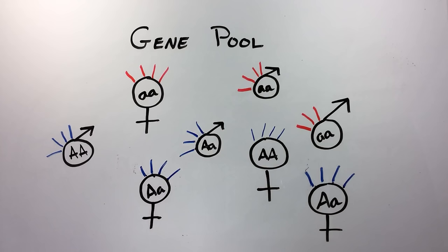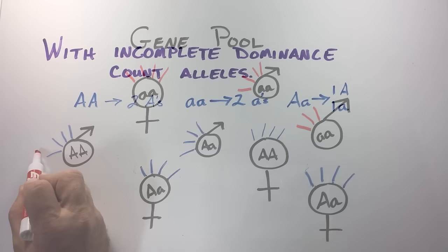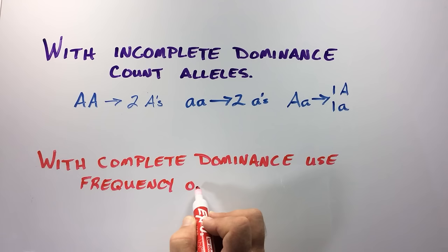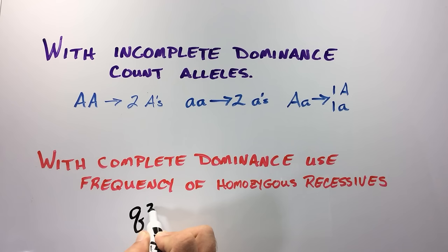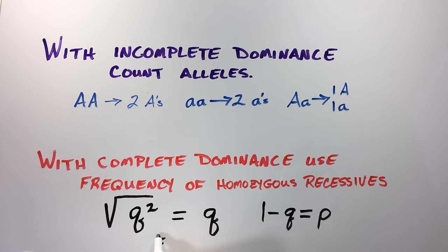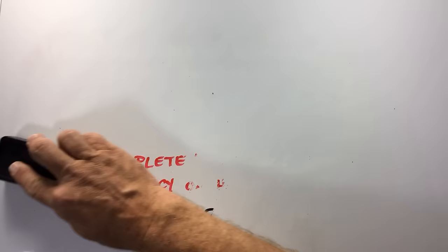Because homozygous dominant and heterozygous individuals cannot be differentiated under a condition of complete dominance, we have to use the frequency of homozygous recessive individuals to estimate allele frequencies. To do this, simply use the square root of the frequency of homozygous recessive individuals in the population. Subtracting this value from one gives an estimate of the frequency P for the big A allele.